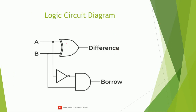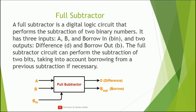This is the logic circuit diagram. First is difference, which is A XOR B, so we have used an XOR gate here. Next is borrow, which is A̅·B: first we take a NOT gate to get A̅, and the other input is B, hence borrow is A̅·B. This is the logic circuit diagram for the half subtractor.